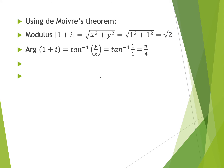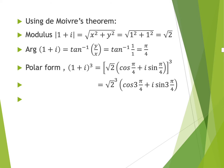Second step: we have to find the argument for the complex number 1 + i. The formula is arctan(y/x). With y = 1 and x = 1, using a calculator, the argument equals π/4. Next, we rewrite the complex number 1 + i into polar form: √2 · (cos(π/4) + i·sin(π/4)).